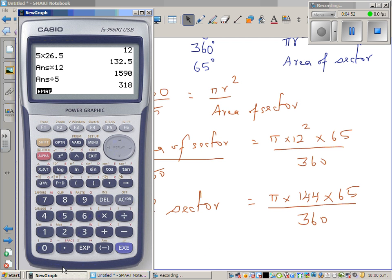So let me use the calculator. Shift π times 144 times 65 divided by 360. Let me write in 2 decimal places, so this is 81.68.